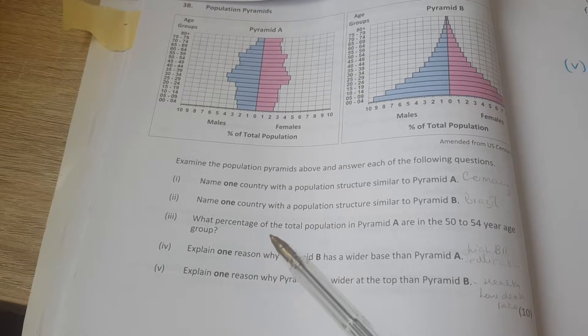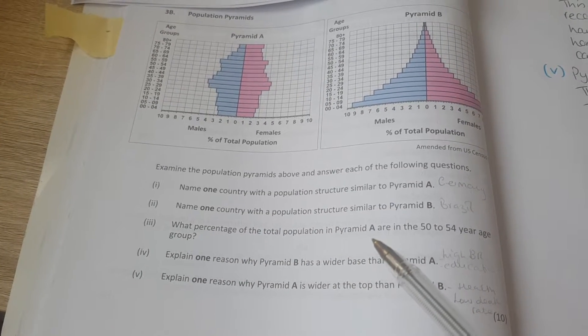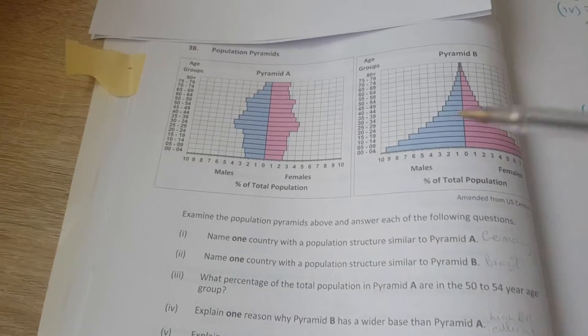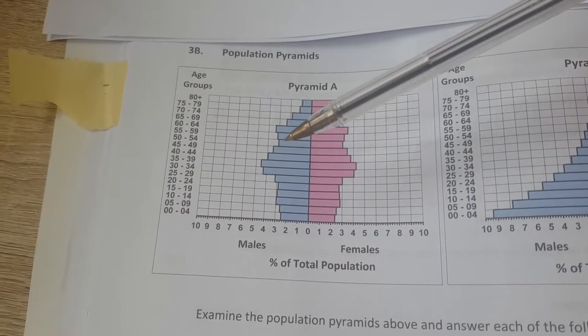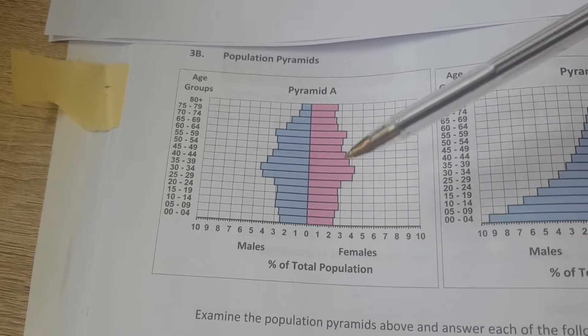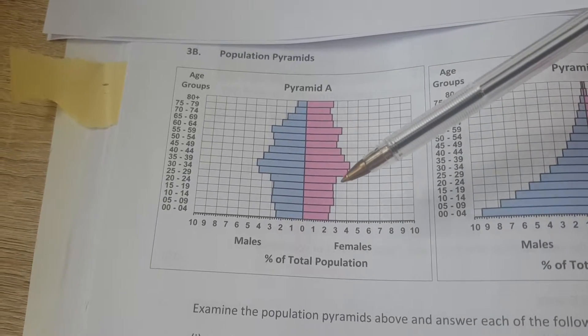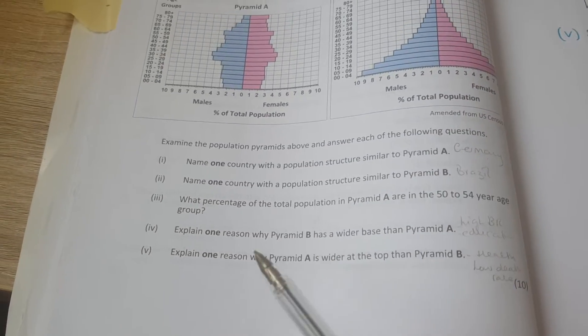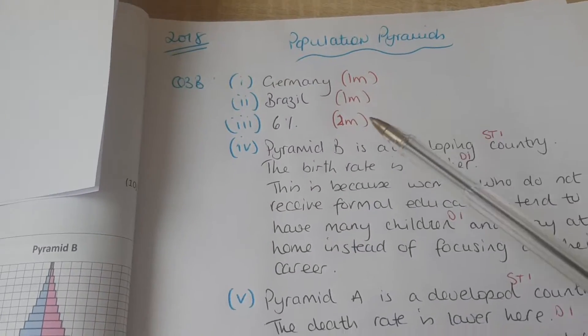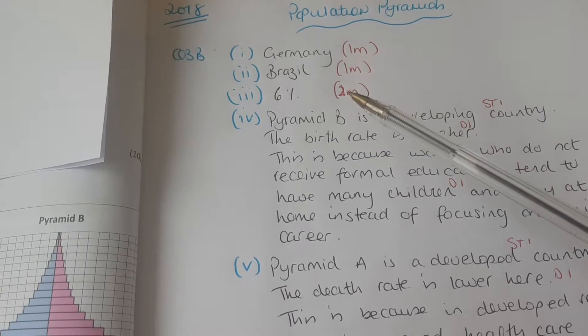All right, what percentage of the total population in pyramid A are in the 50 to 54 year age group? 50 to 54 is here. We have here, it is all the way down three, and you have here three. So three and three is six percent. And if we look here, the marks get Germany one mark, Brazil one mark, six percent two marks.